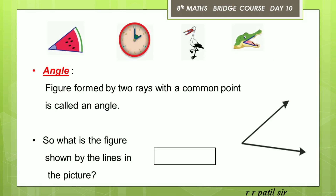The figure formed by two rays with a common point is called an angle. That means when you have two rays meeting at one common point, you have an angle. In all four pictures, the blue lines are the rays, and they share one common vertex. So the figure shown by the blue lines in each picture is an angle.